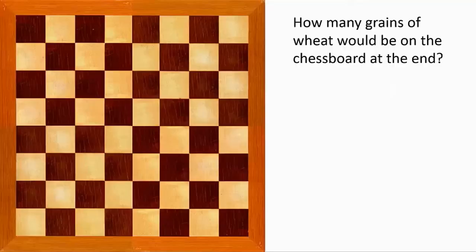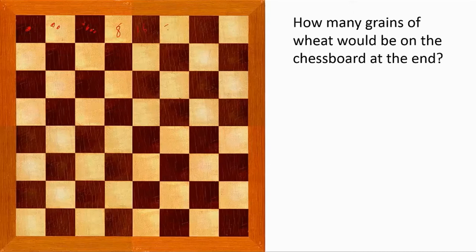Let's look at this more carefully. He wanted one grain placed here, two grains here, four here, and so on — 8, 16, 32, 64, 128, and so on.